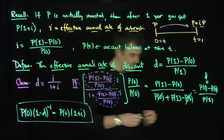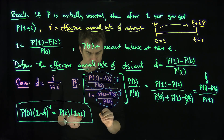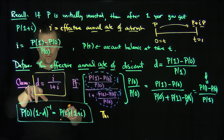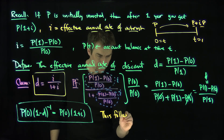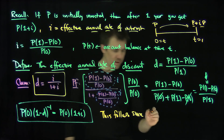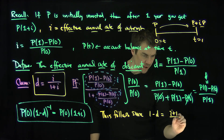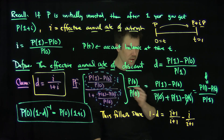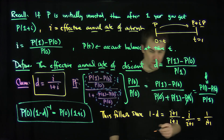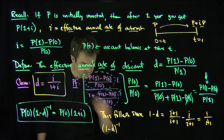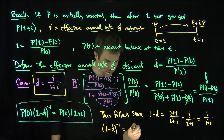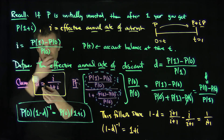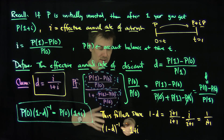So this is the relationship between i and d. To see why (1 − d)⁻¹ = 1 + i, note that 1 − d equals (i + 1)/(i + 1) minus i/(i + 1), which equals 1/(i + 1). Therefore (1 − d)⁻¹ equals 1 + i. So we can either use d = i/(1 + i), or equivalently (1 − d)⁻¹ = 1 + i.